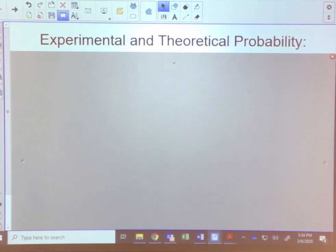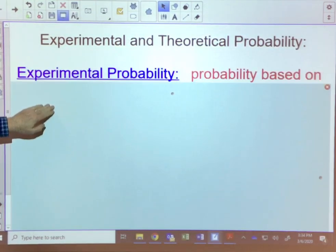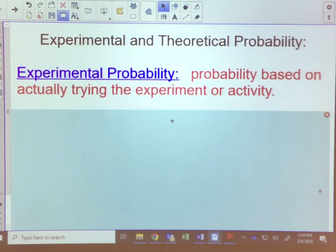We've already talked about basic probability, and when we did that we touched on experimental and theoretical probability. Let's get a definition for both of those. Experimental probability is probability based on actually trying the experiment or activity.